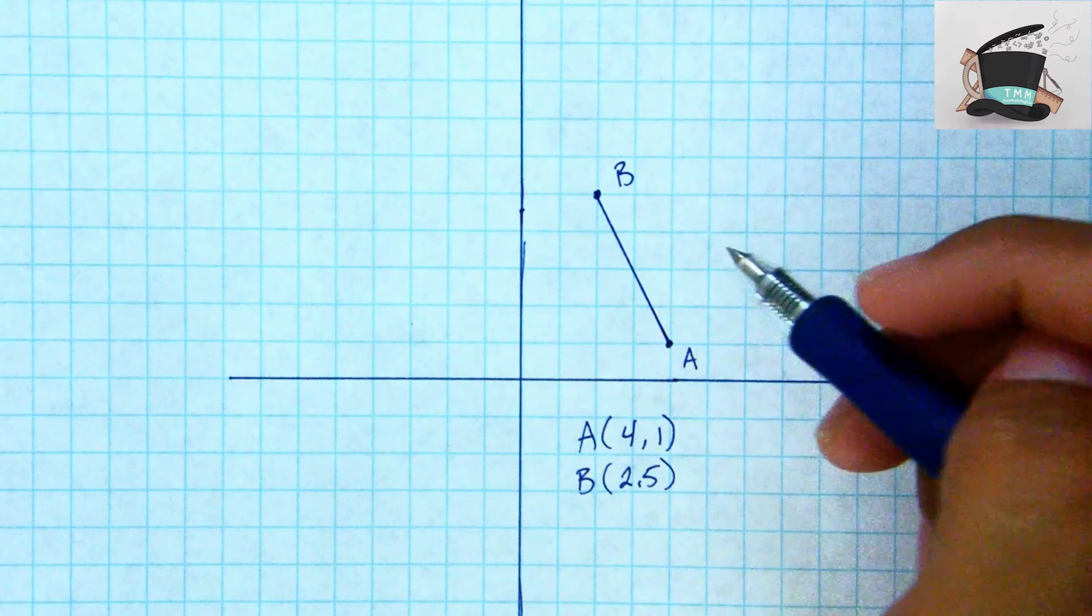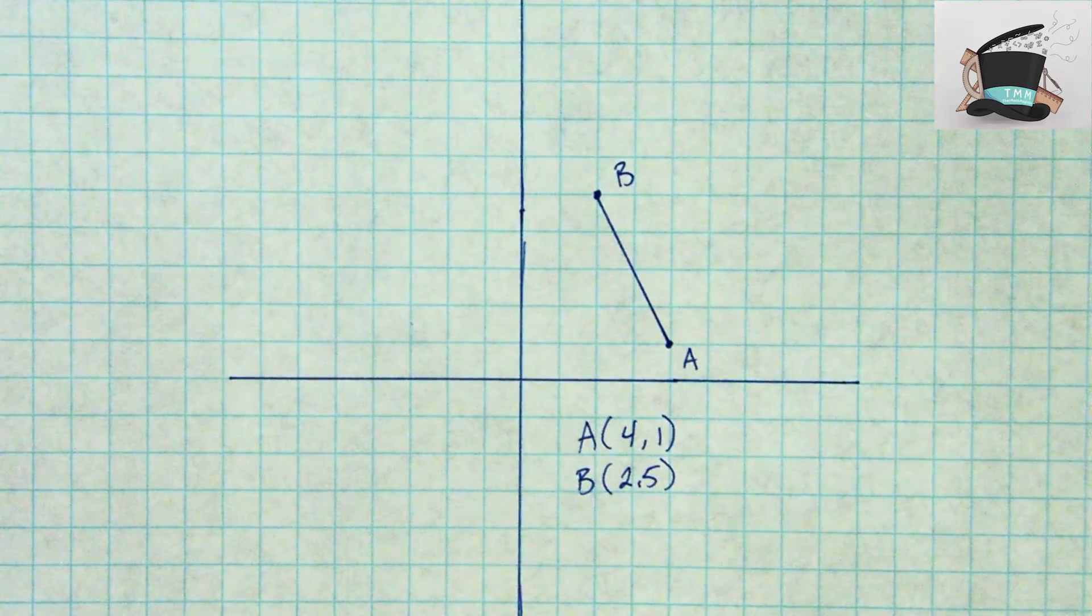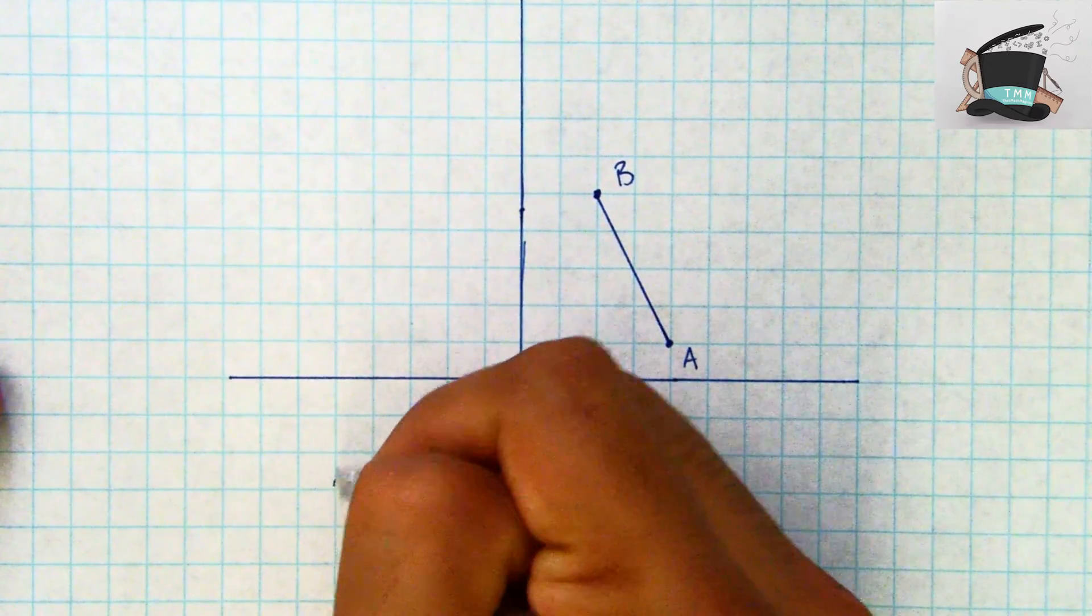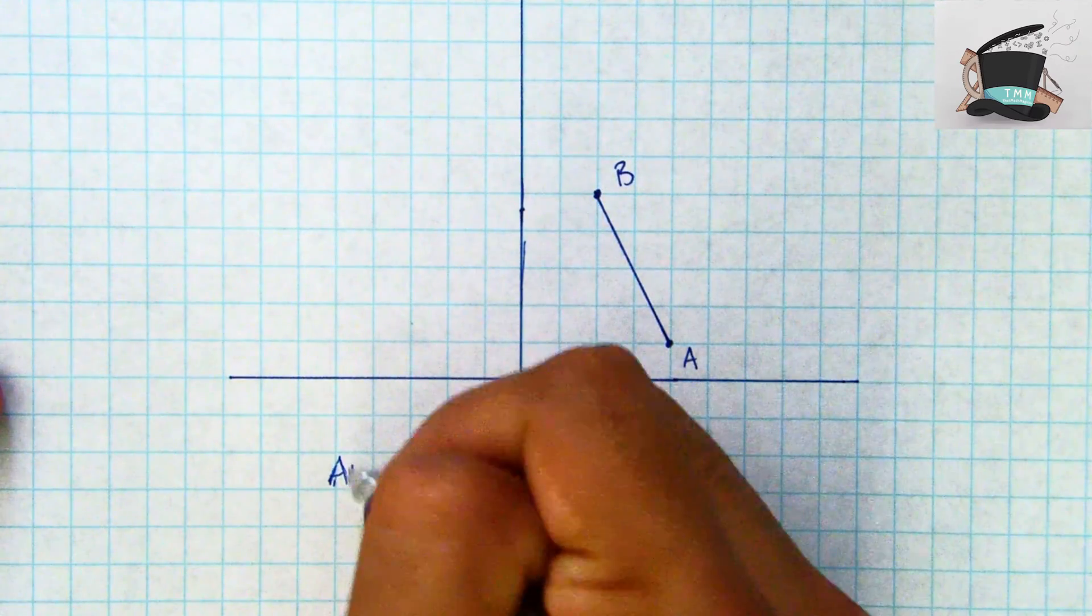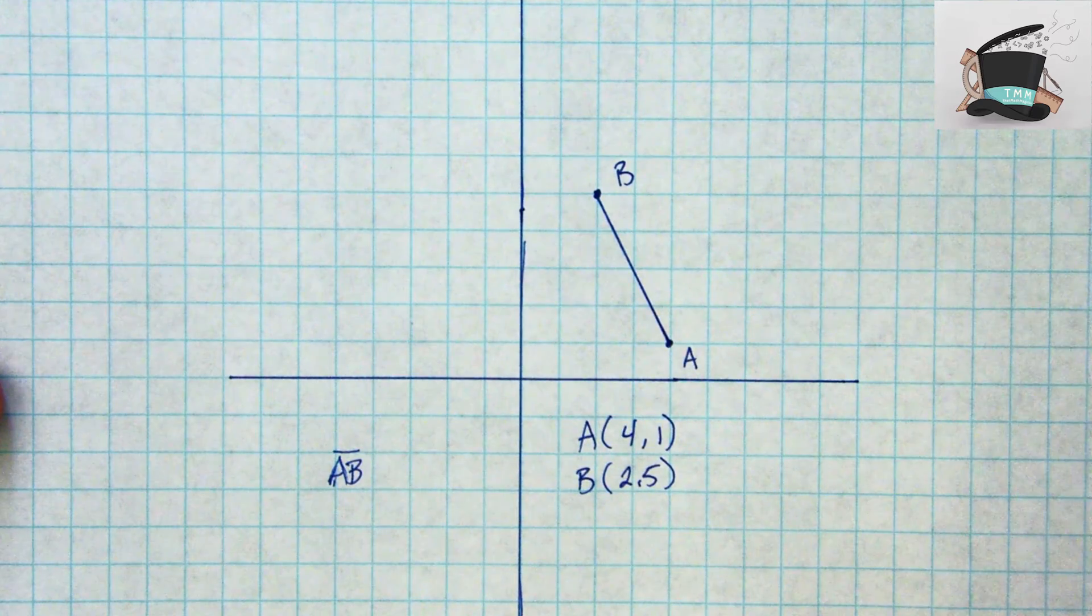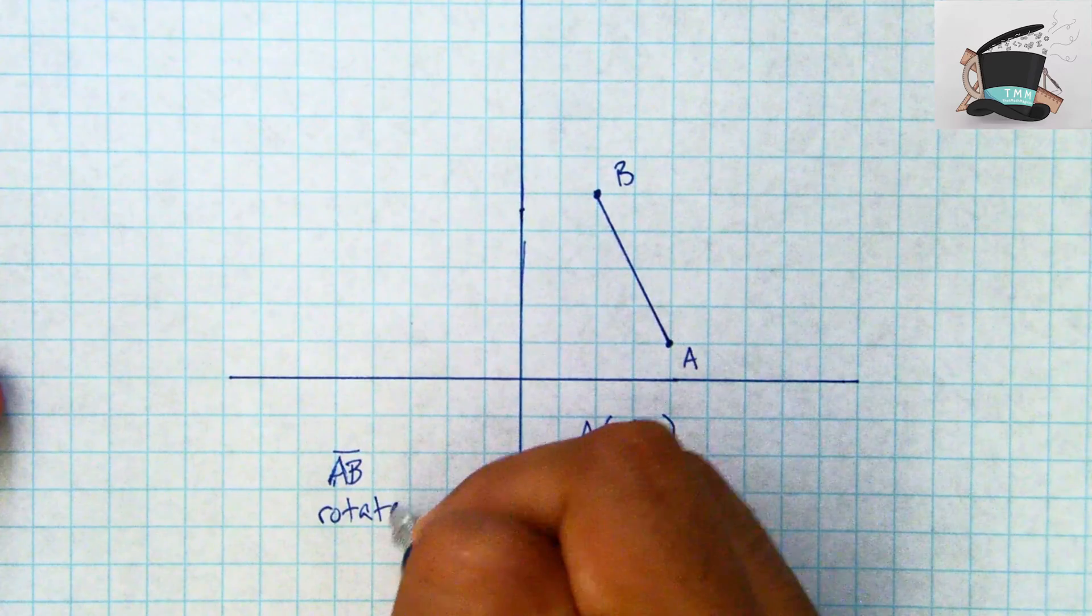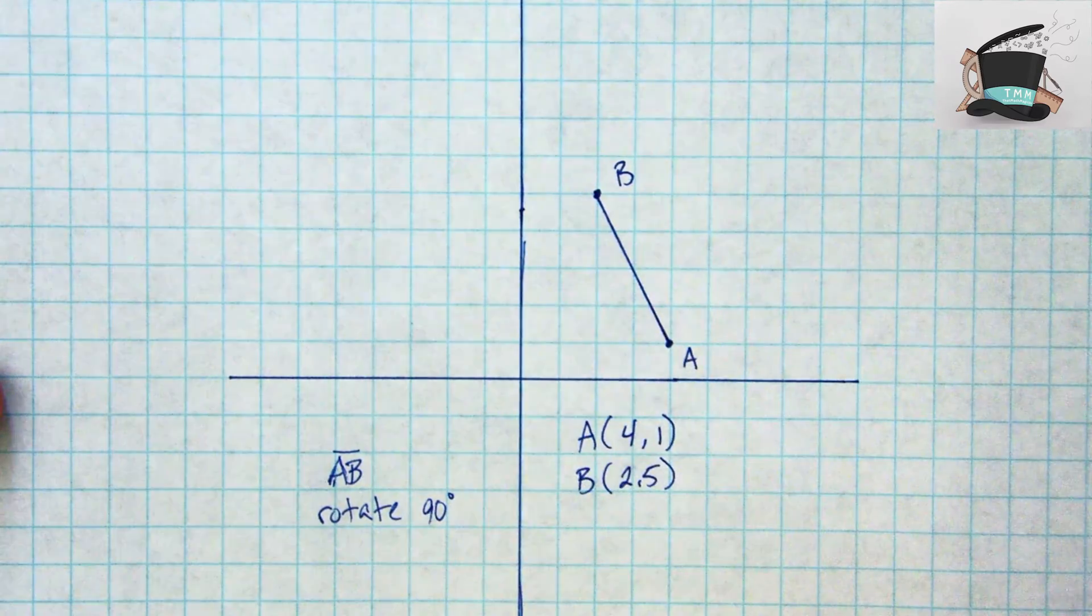Perfect. Now what we want to do for this problem is let's say I want to take the line segment AB and I want to rotate it, let's say let's rotate it 90 degrees and we'll do it counterclockwise, so CCW counterclockwise which is in that direction.